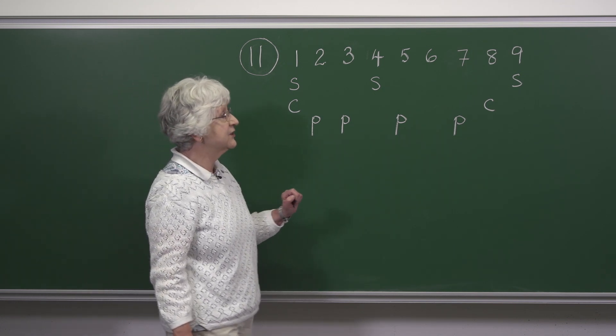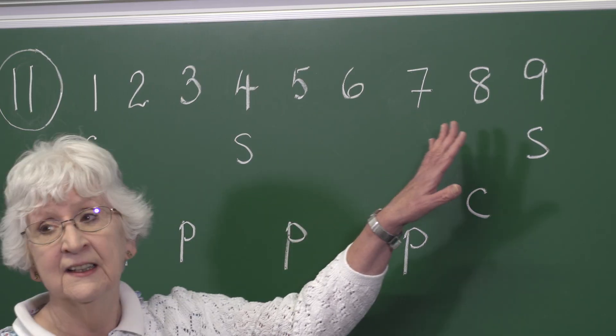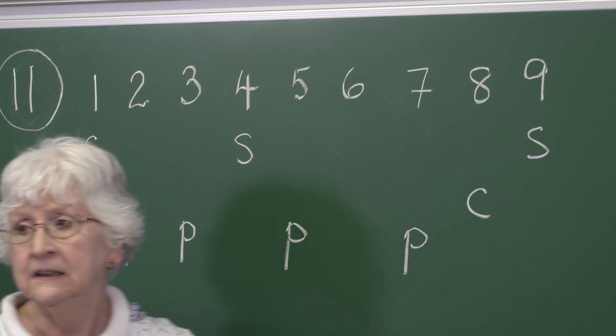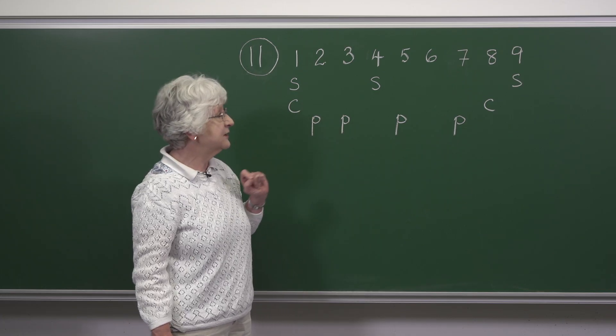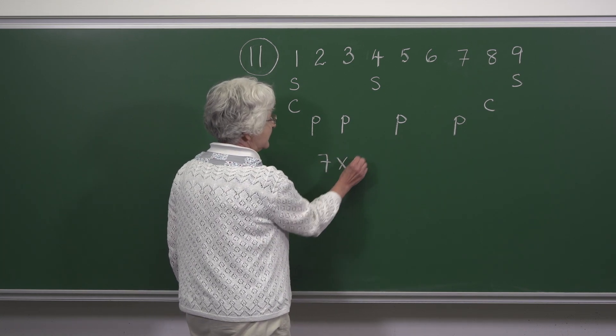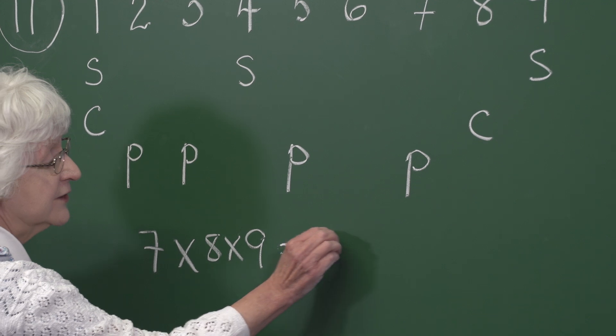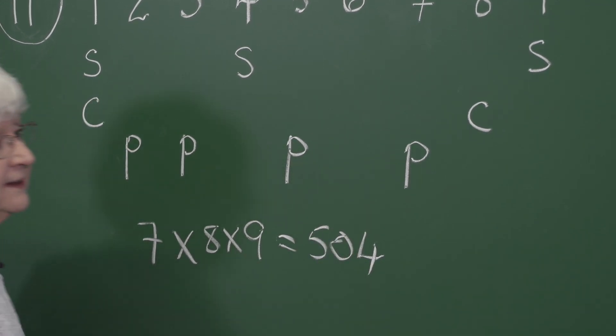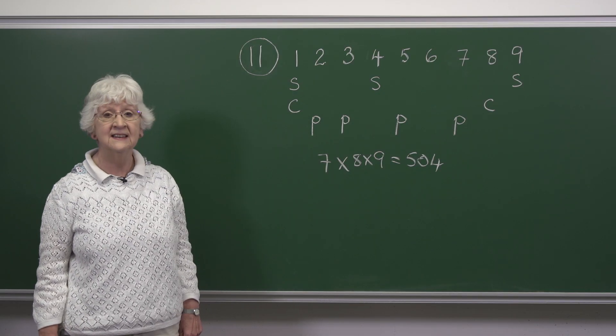We see the only consecutive integers which work are 7, 8, and 9. And when we multiply these numbers together, 7 times 8 times 9 is 504, and the answer is E.